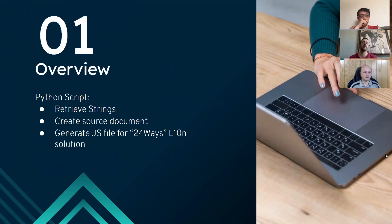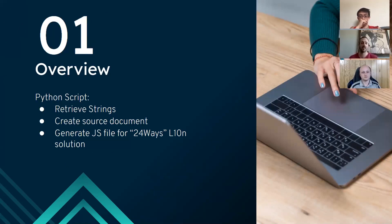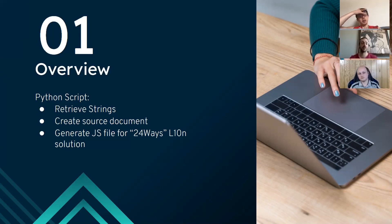Our Python script does three main things. It gets strings from documents, primarily HTML documents as we programmed it. It creates a source document for those strings to be stored in, so that it's ready for translation — it has a list of strings nicely laid out so they can be handed off to a CAT tool. And finally, it creates a JavaScript file. We use the 24 Ways localization solution, which if you've taken website localization with Max, you'll be very familiar with. But you could really do this for any localization solution. We just chose 24 Ways for the sake of simplicity and showcasing its power.